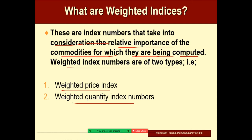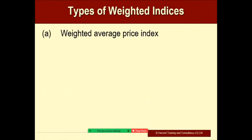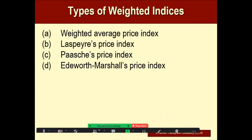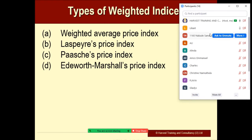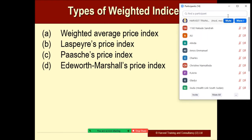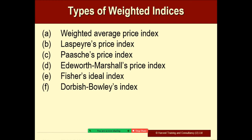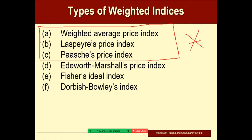Under the category of weighted index numbers, we shall find the weighted average price indices, Laspeyres' price index, Paasche's price index, Fisher's Ideal index, and Dorbish-Bowley's index. The most common and highly examinable are the weighted average price indices, Laspeyres' price index, and Paasche's price index, though it is also important to look at the others.